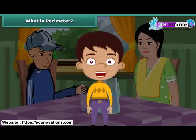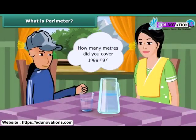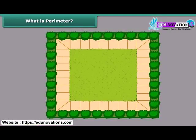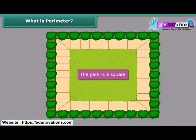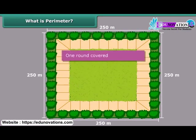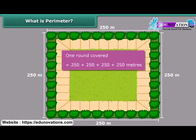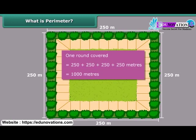Let us now try to answer your mother's question. How many meters did you cover jogging? In every round of jogging, you covered the four sides of the park. Since the park is a square, all its sides are equal. Thus, in one round, you covered 250 plus 250 plus 250 plus 250 meters — that is 1,000 meters.